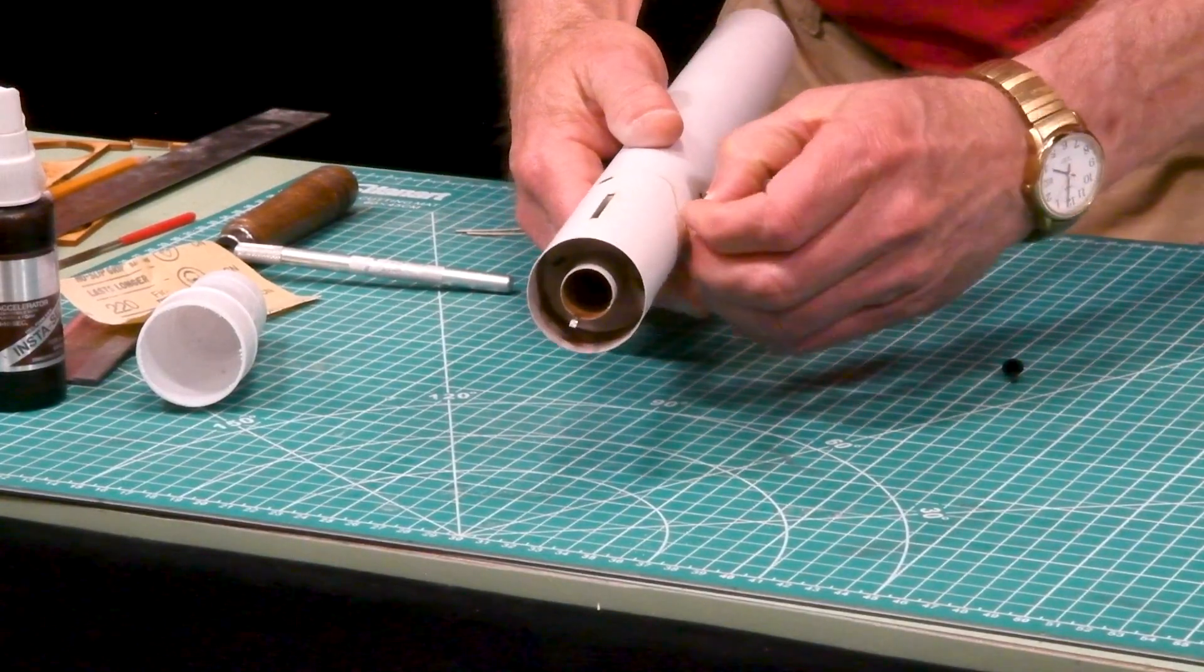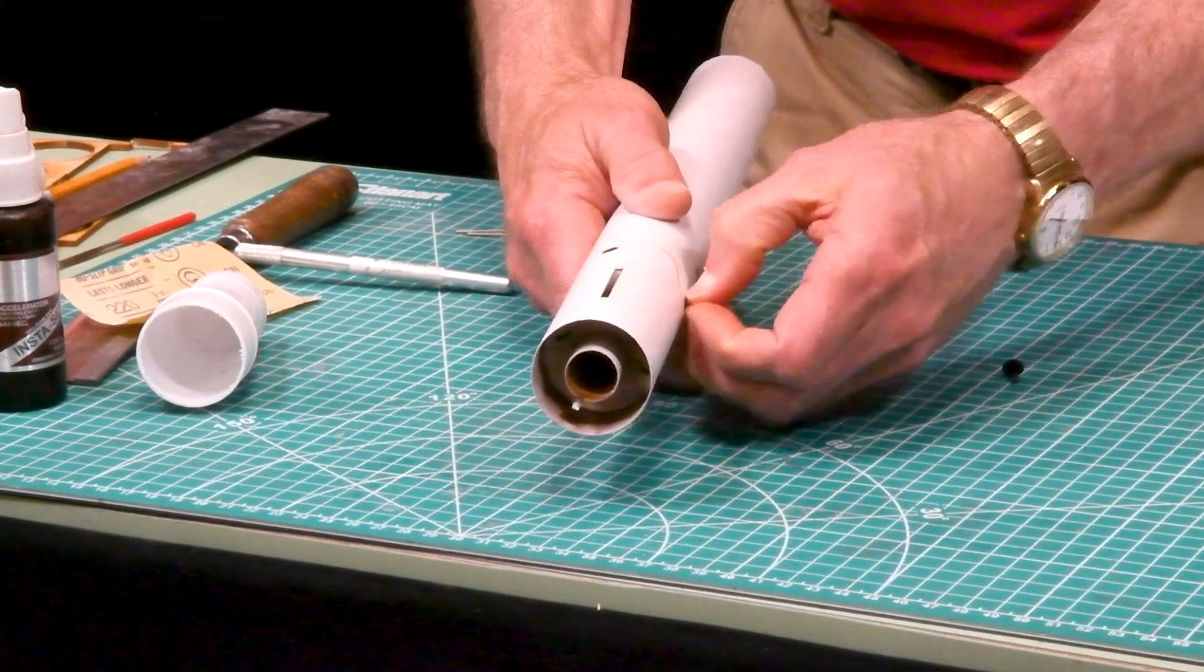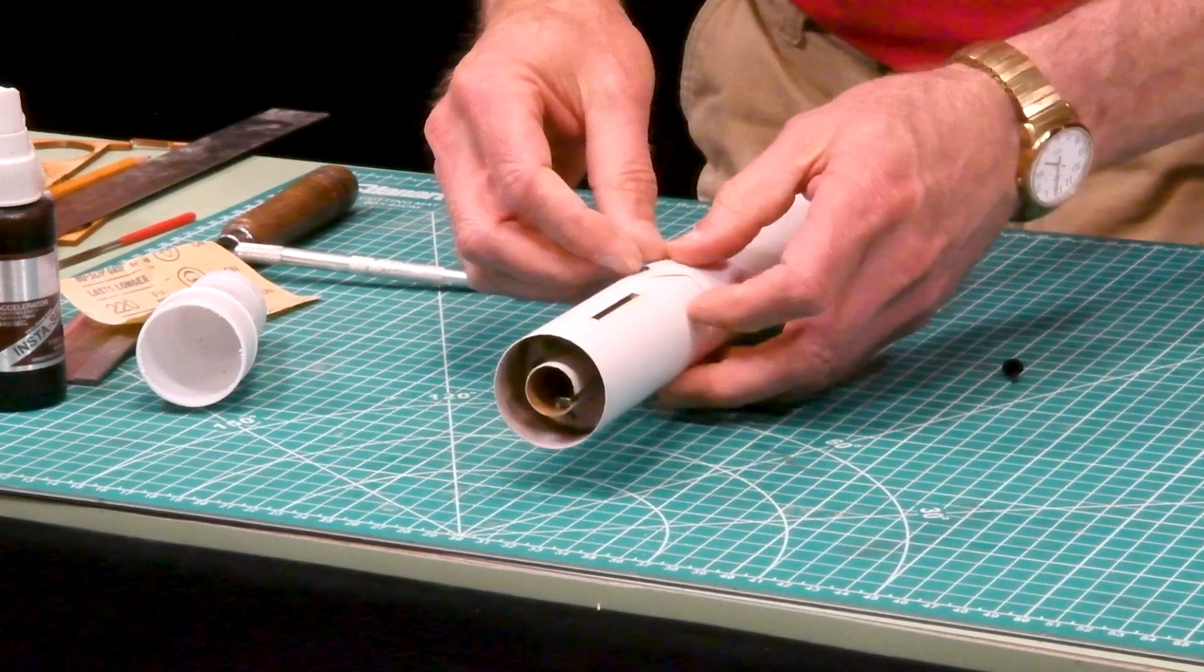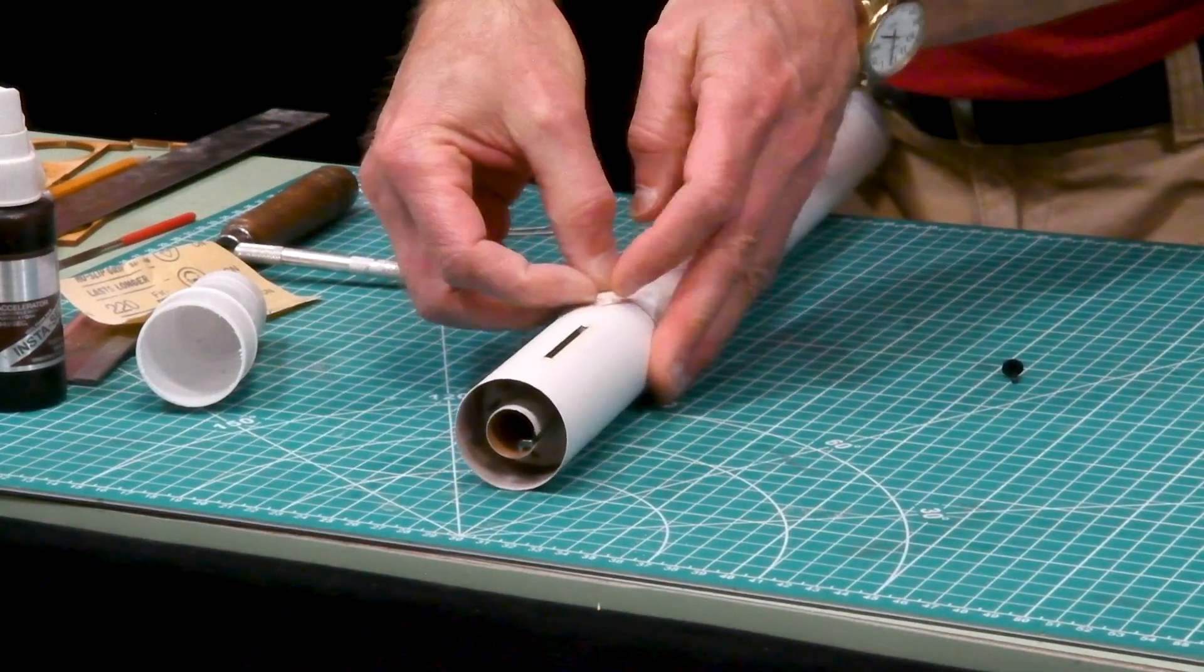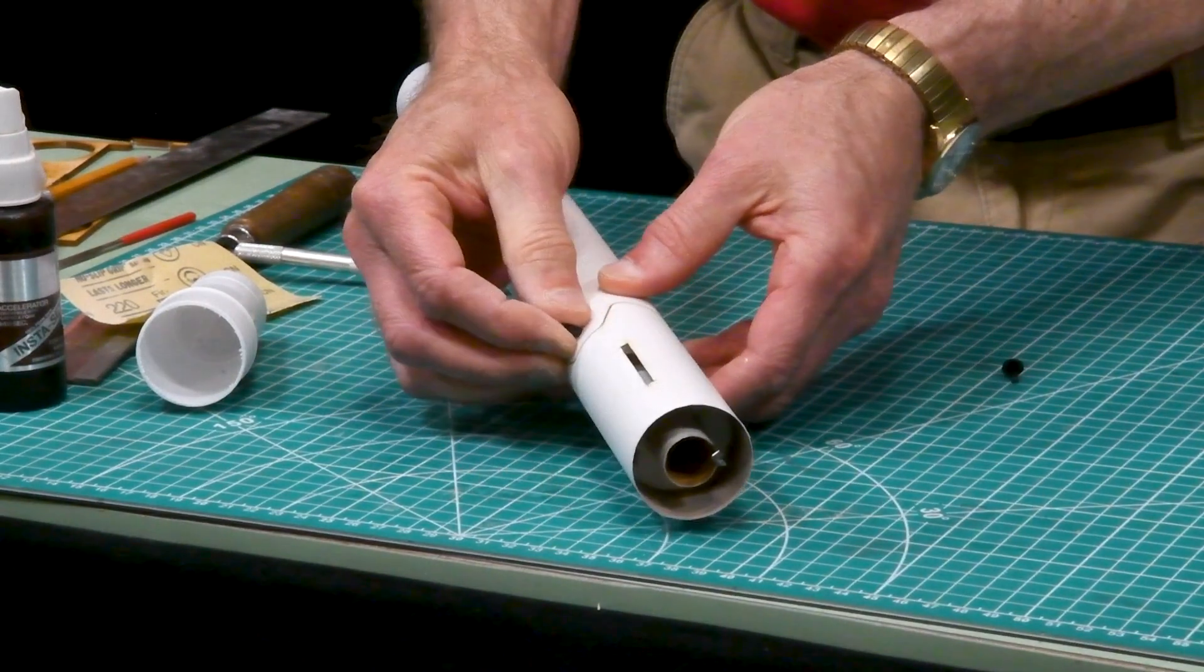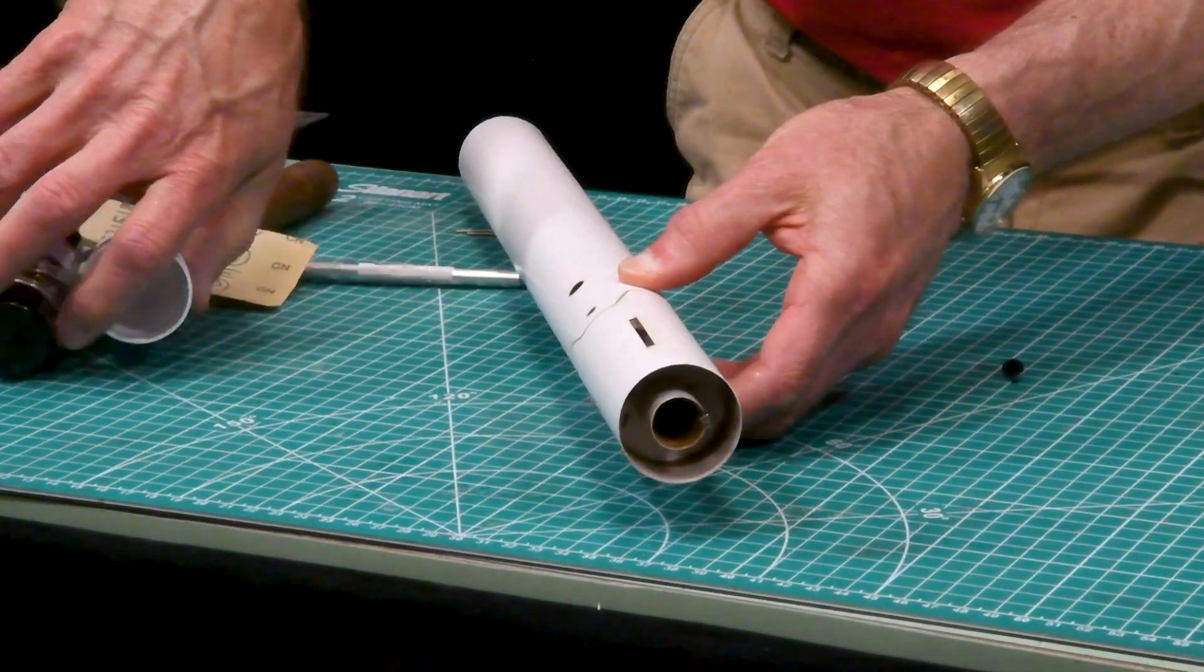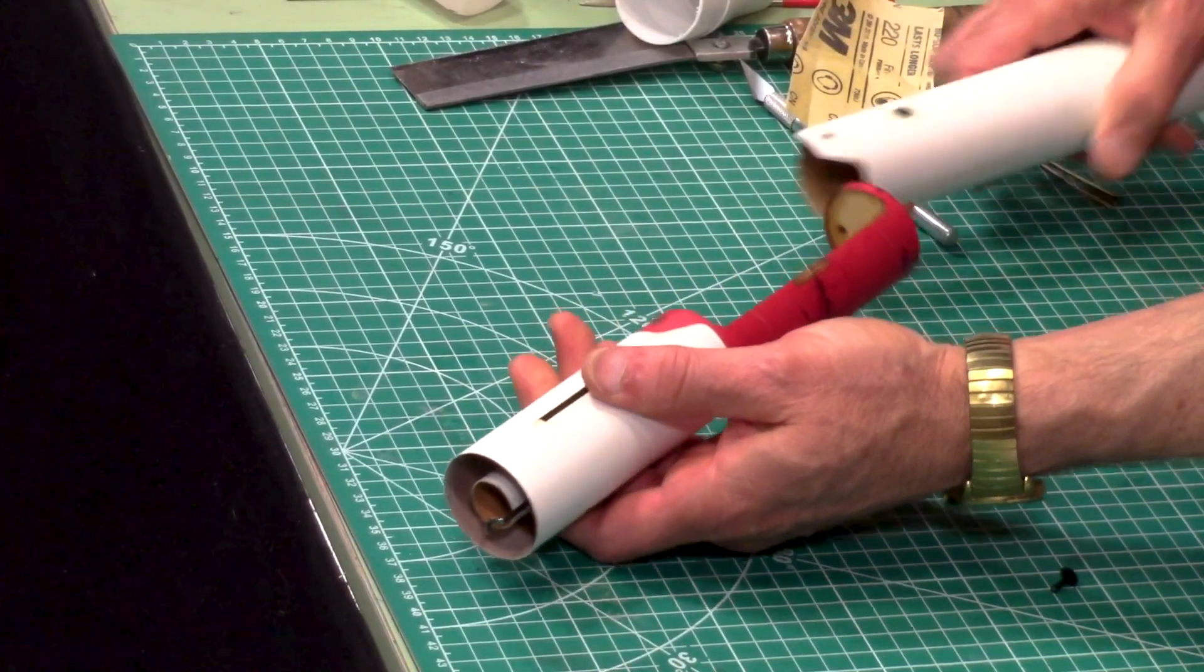Once the adhesive hardens enough to hold the motor mount assembly in place, remove the rivet base and slide the upper tube off. Just pry that up, pop it out, and slide that off.